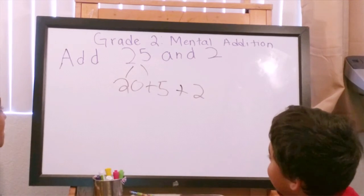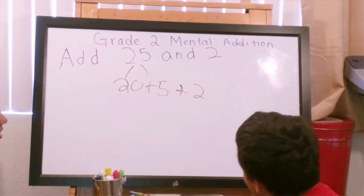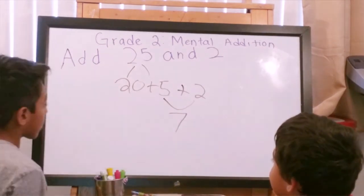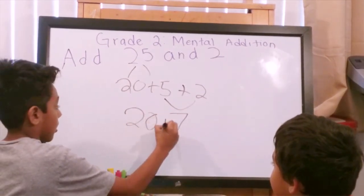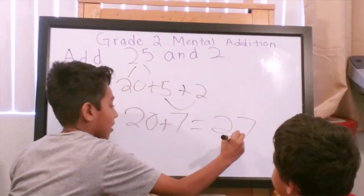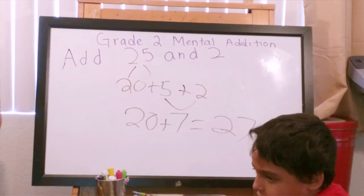So, five plus two is seven. And twenty plus seven is twenty-seven. And that's your answer.